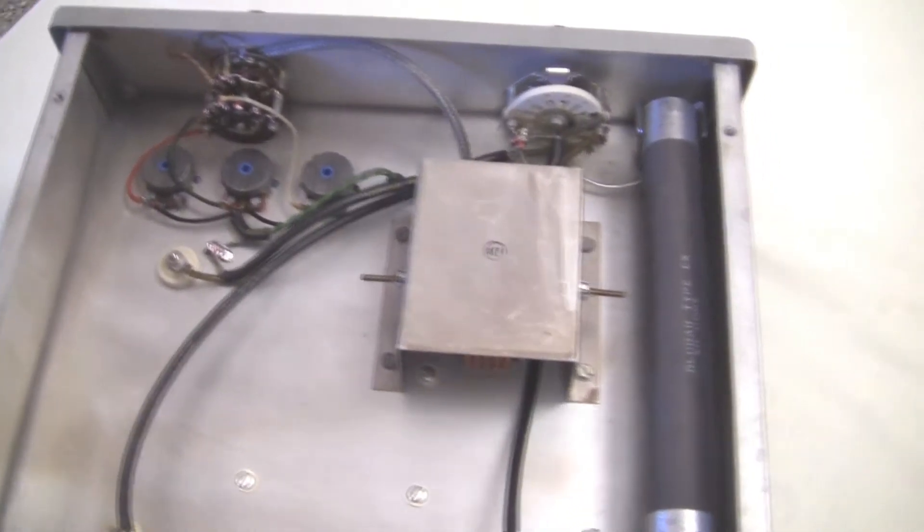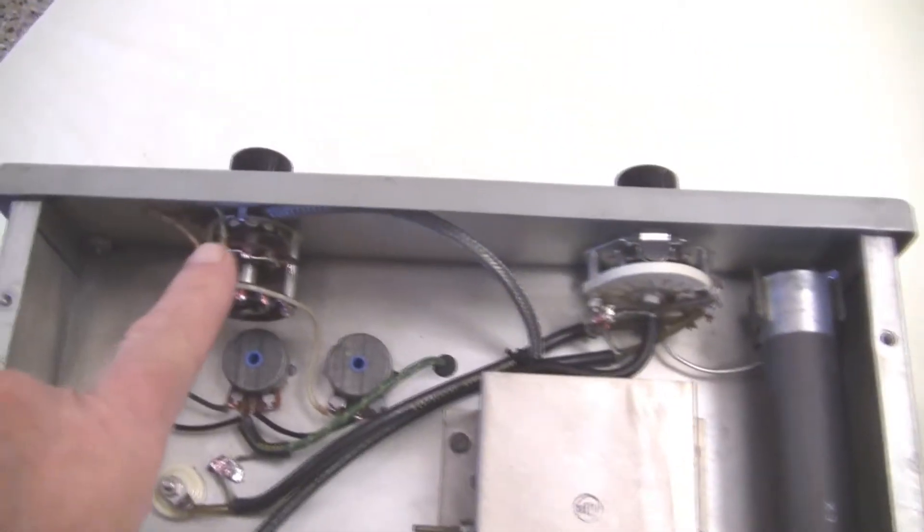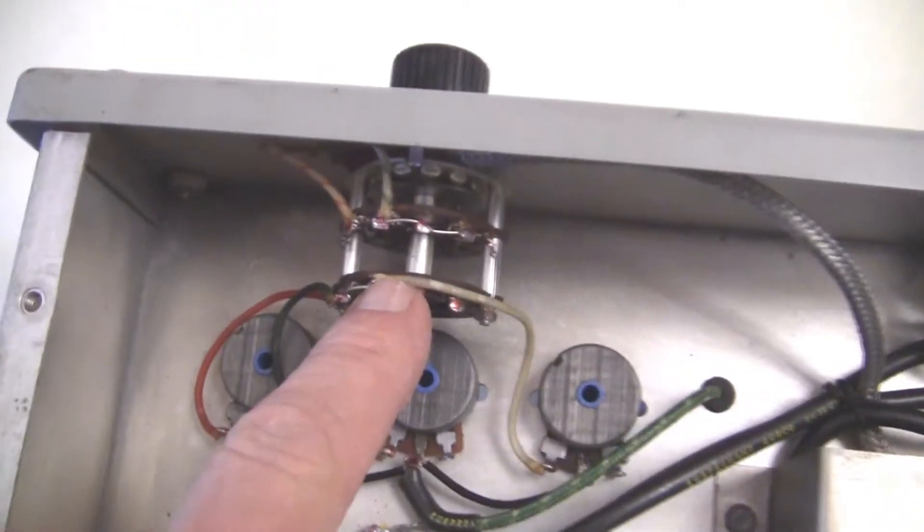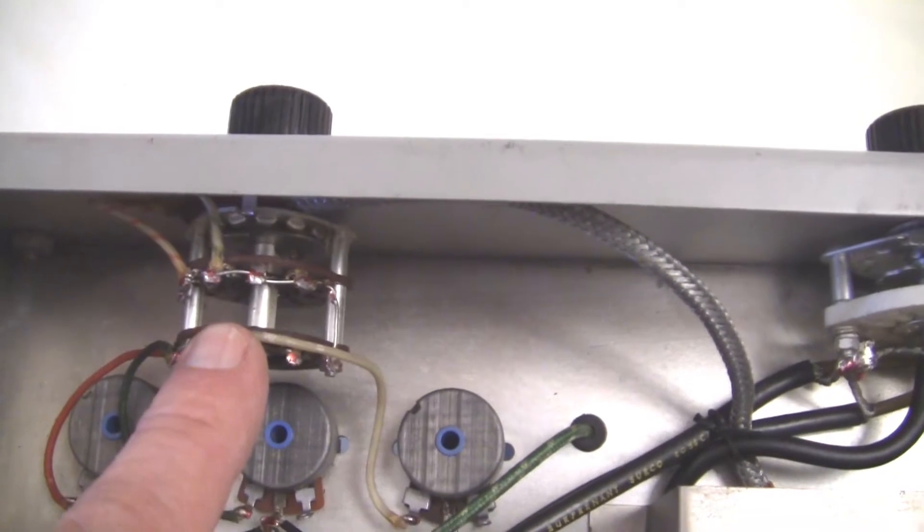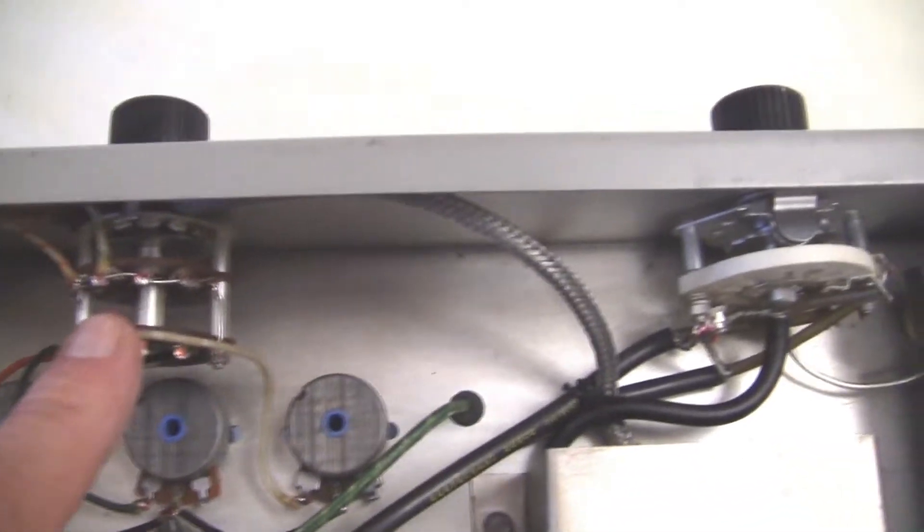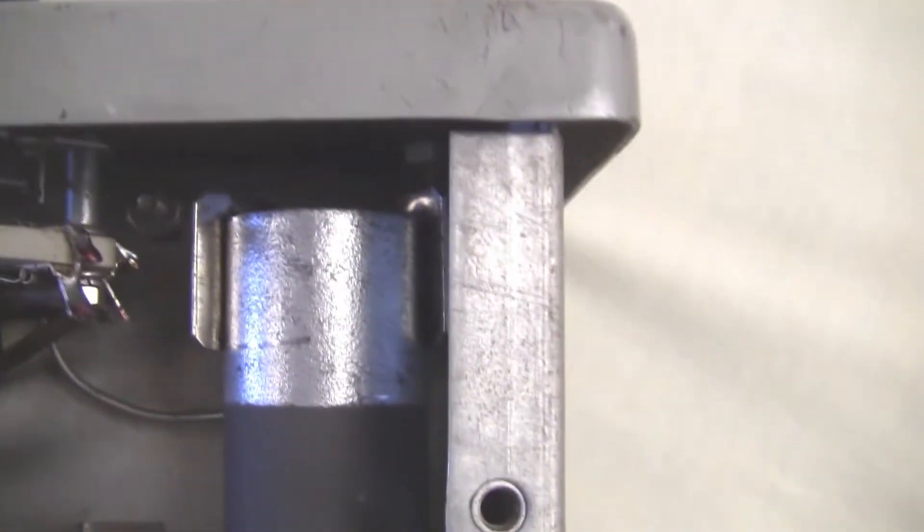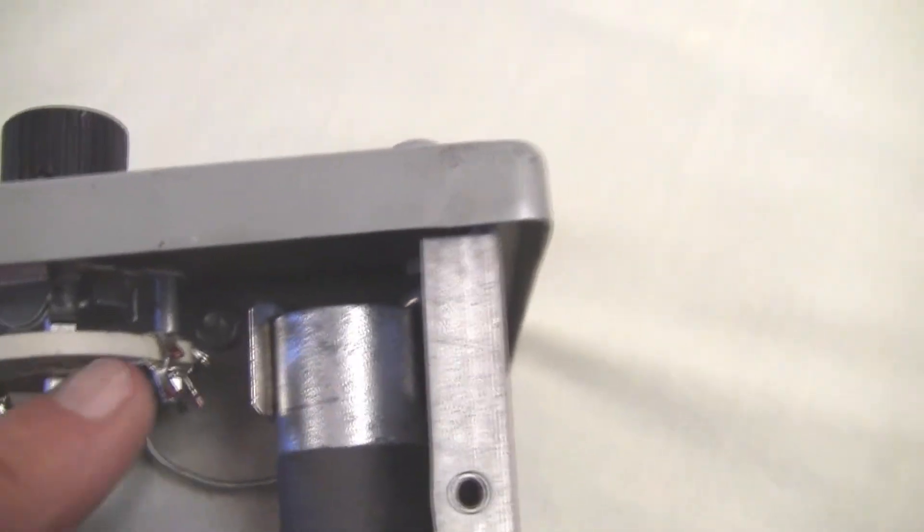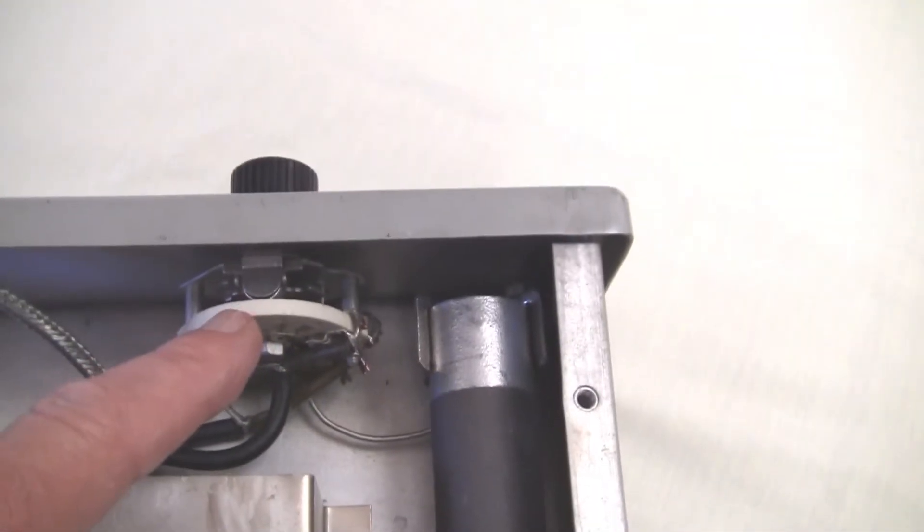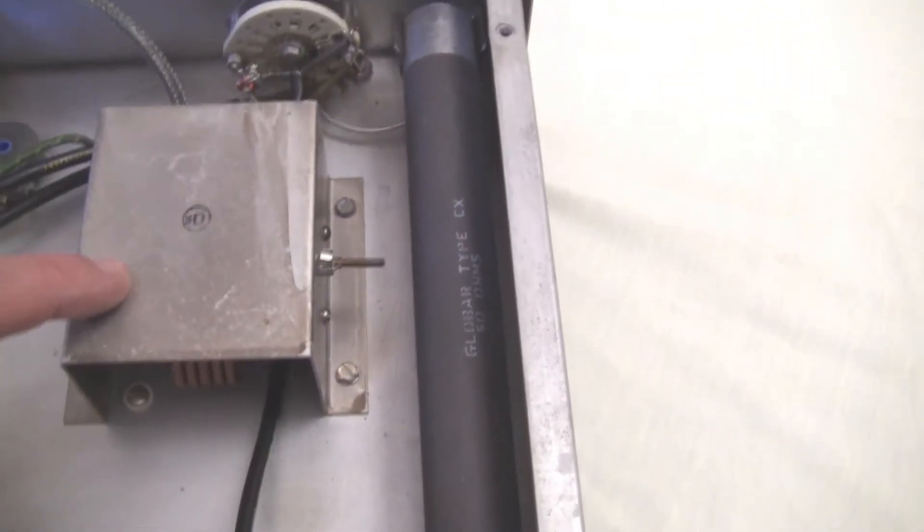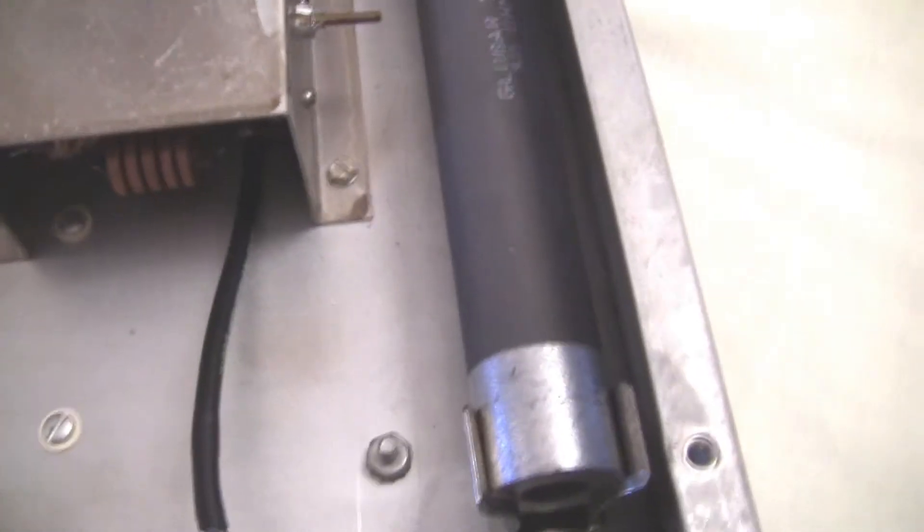Well, looking underneath, here's your switch for adjusting the power on the SWR, or really it's a power meter. And this is the band switch for connecting between the dummy load, direct input and output. And your circuitry for the bridge is underneath here.